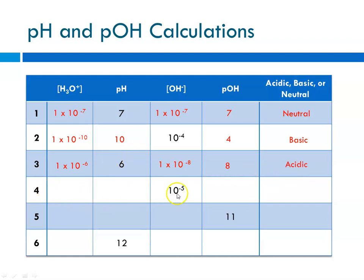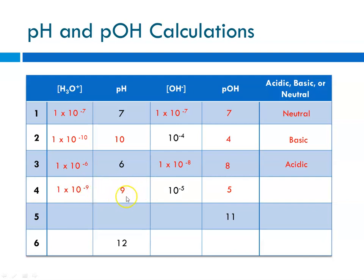Question 4: hydroxide ion concentration is 10 to the minus 5. That means the pOH is minus the log base 10 of that, which is 5. If pOH is 5, then pH is 14 minus 5, which is 9. That means the hydronium ion concentration is 1 times 10 to the minus 9, which is 1 times 10 to the minus pH. Since pH is greater than 7, this is basic.